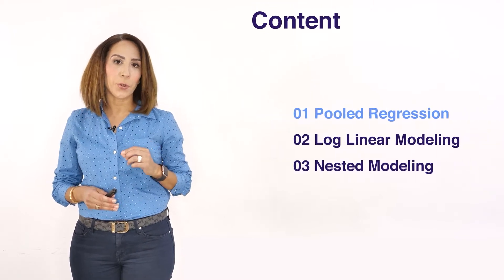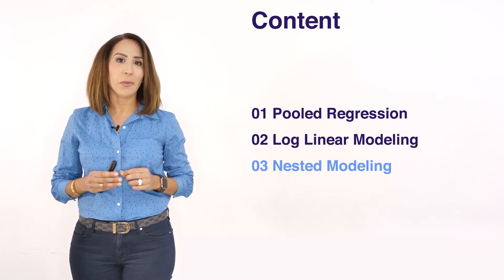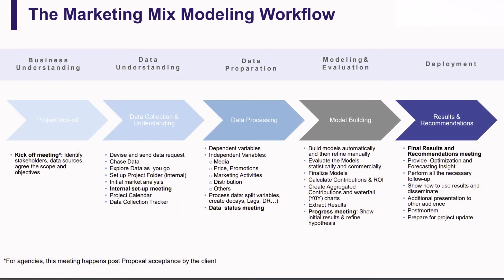The first technique is pool regression, the second one is log-linear, and the third one is nested models. Reflecting on the marketing mix modeling workflow, we are now at step number four where we are starting to model the data, and that's where you need to take a decision on which algorithm you'll be using — standard linear regression, pool regression, nested models, or log-linear.